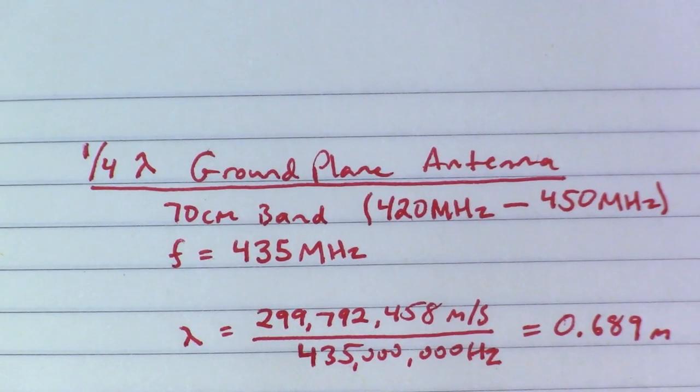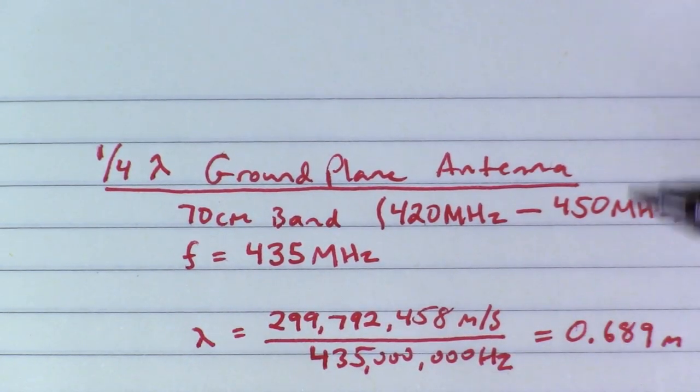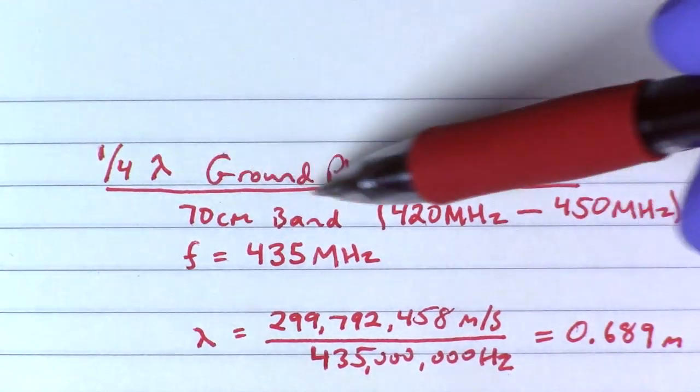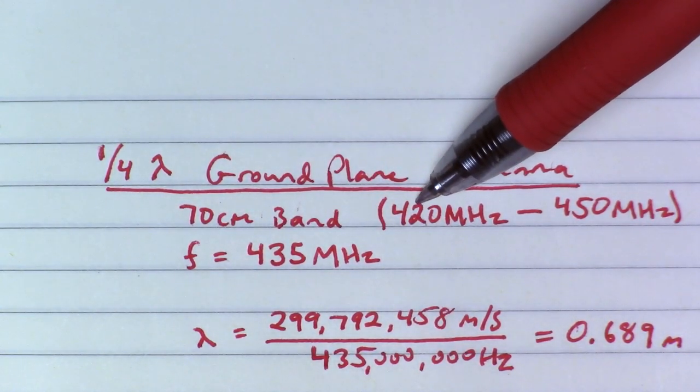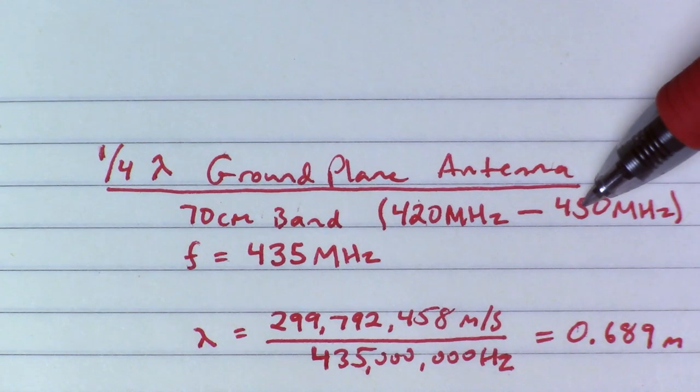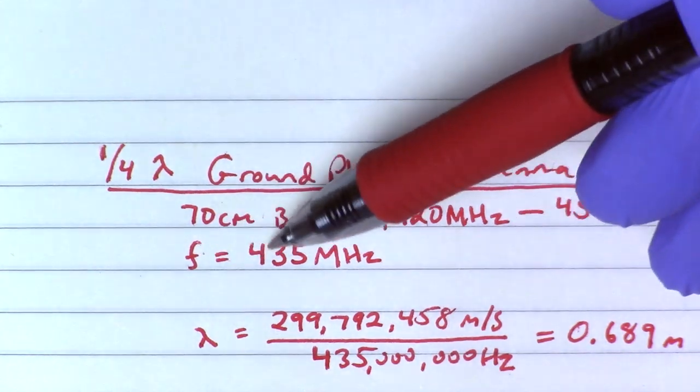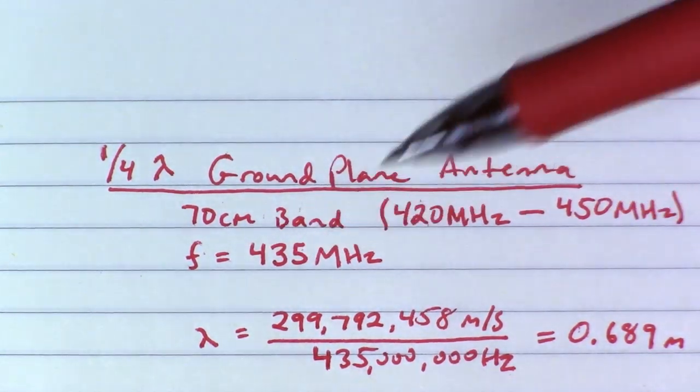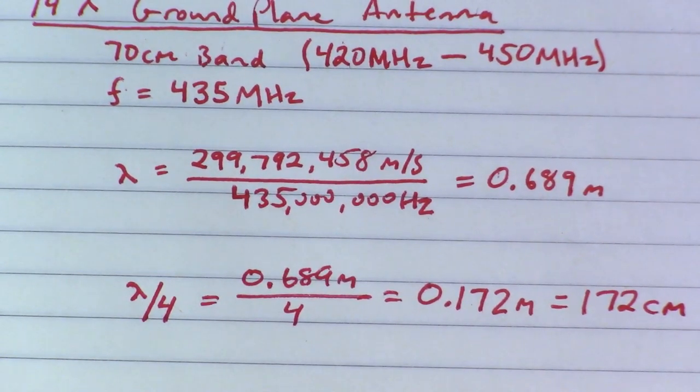So I just realized as I'm editing this, I never explained how I calculated the lengths. So let me go ahead and do that real quick. So we're talking about a quarter wave ground plane antenna for the 70 centimeter band. That is 420 megahertz to 450 megahertz. Our operating frequency needs to be 435, not 432, as I previously mentioned.